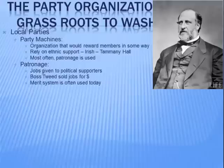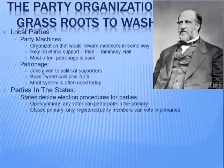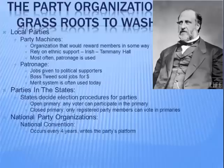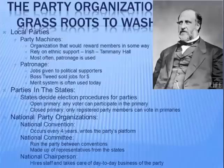States decide election procedures for political parties, including whether a primary will be open or closed. An open primary allows any voter to participate regardless of party membership. I live in New York State and we have a closed primary, so to vote for the Democratic or Republican nominee for president you have to be a registered member of that party. National party organizations host the national convention every four years and write the party platform. The national committee runs the party between conventions and is made up of representatives from the states; the national chairperson hires staff and handles day-to-day business.